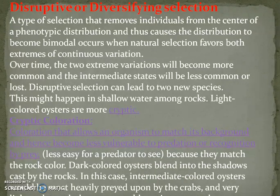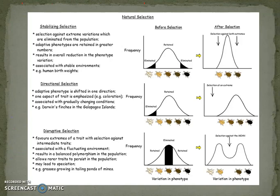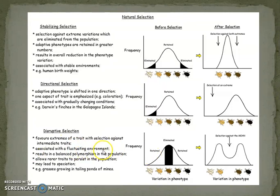The third type is disruptive selection, also known as diversifying selection. It favours extremes of a trait with selection against the intermediate trait, associated with a fluctuating environment. Environmental conditions will not be stabilised — they may be fluctuating. It results in balanced polymorphism in the population and allows rarer traits to persist. It may lead to speciation. An example is grasses growing in tailing ponds of mines.